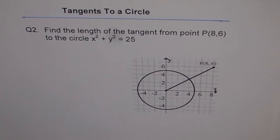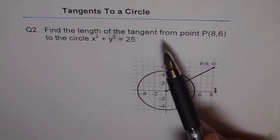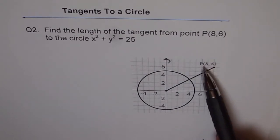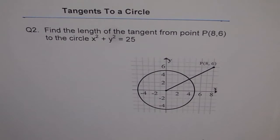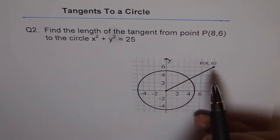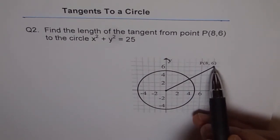Tangents to a circle. Question 2. Find the length of the tangent from point P(8,6) to the circle x² + y² = 25. So this is the point (8,6) given to us.